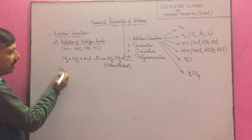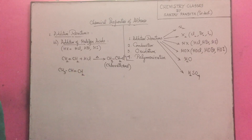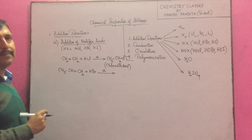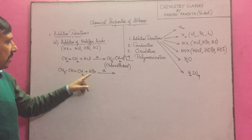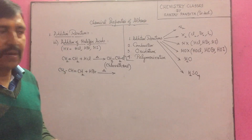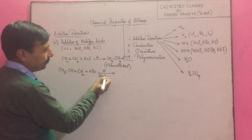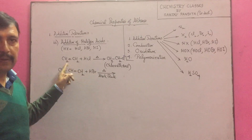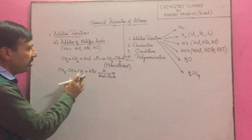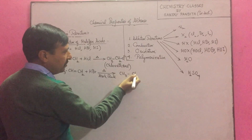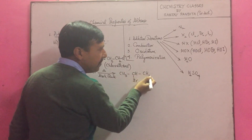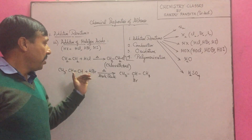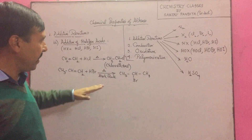When halogen acids are added to a symmetrical double bond, a straightforward product is formed. But if I add a halogen acid to an unsymmetrical double bond — for example, CH₃–CH=CH₂ with HBr — there are two possibilities for where Br can go. This is governed by Markovnikov's rule: the negative part of the addendum goes to that carbon across the multiple bond which has the lesser number of hydrogen atoms. This reaction occurs through an electrophilic addition mechanism.